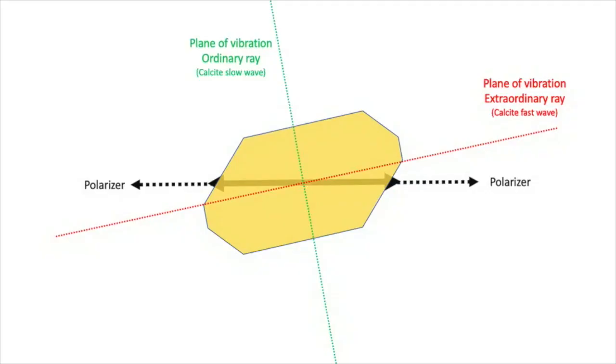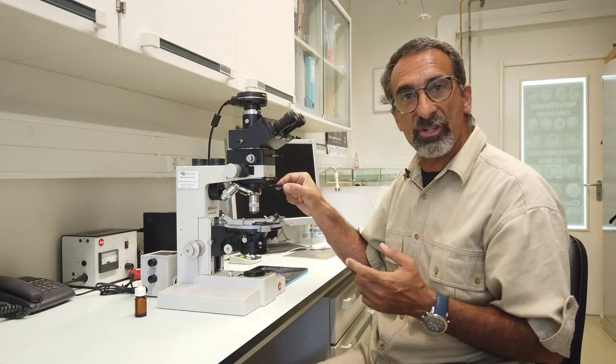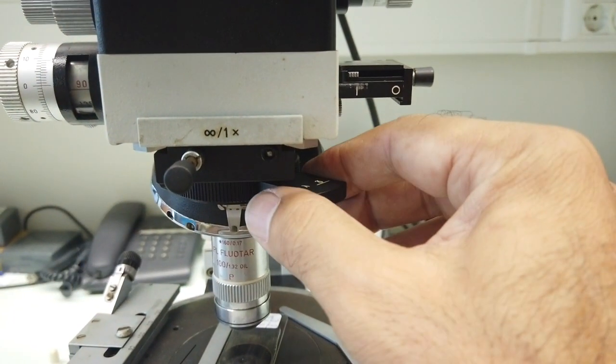Is there a way to distinguish which is which? Yes there is, but for that we need to use the auxiliary plate, a gypsum plate in our case.